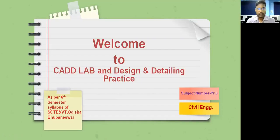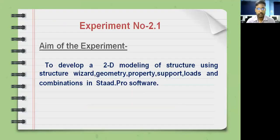Dear students, welcome to a CAD lab design and detailing practice, which is as per the sixth semester syllabus for civil engineering students. The subject number is PR3. The experiment number is 2.1. The aim of the experiment is to develop a 2D modeling of structure using a structural wizard — geometry, property, support, loads and combination — in StartPro software.